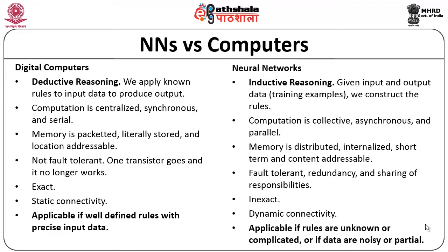Computationally, digital computers are centralized, synchronous, and serial in executing tasks. But neural networks are collective, asynchronous, and parallel. Digital computers are applicable when there is a well-defined rule set with precise input data; neural networks can handle any kind of data even without defined rules — including noisy or partial data — and create respective outputs. The outputs of digital computers are exact, whereas neural network outputs are inexact and dynamic in nature, compared to the static nature of digital computers.